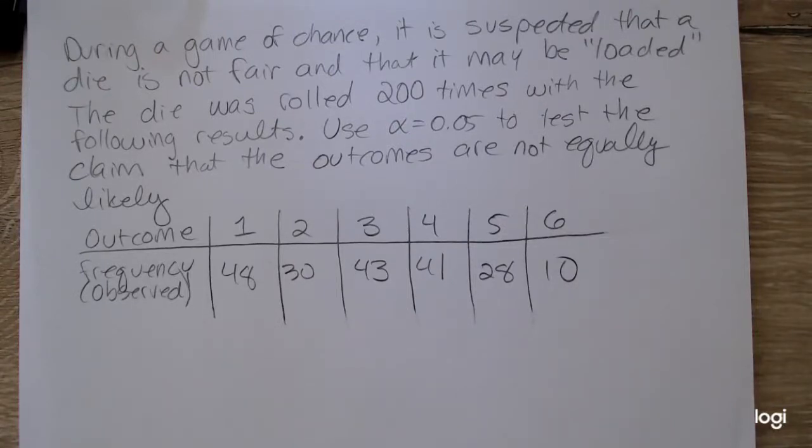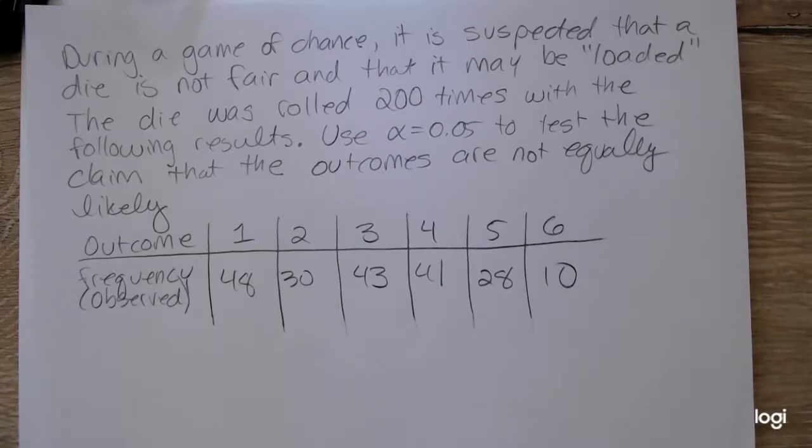This is an example of the chi-square goodness-of-fit test when the expected frequency distribution is to be uniform, or in other words, each outcome is expected to be equally likely.